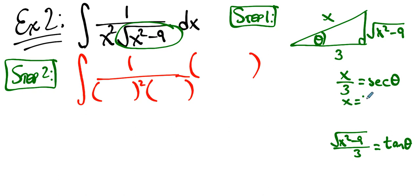Because we know that x is three secant theta, which means dx looks like this. Right? So now, x squared is this squared. The radical is three tan theta. And dx is this piece.